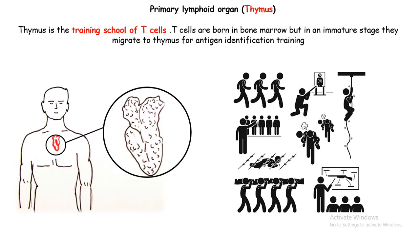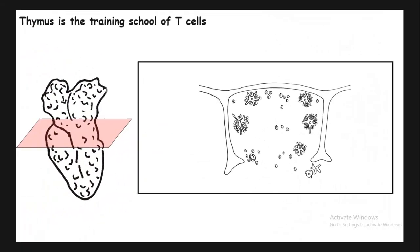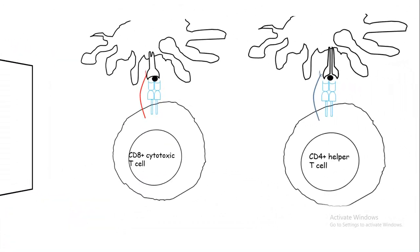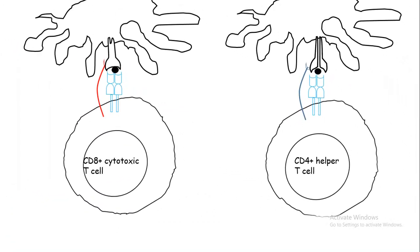Thymus is just a training school for T-cells, just like an army training school where the armies learn several tactics and become an army. After thymic selection, T-cells become two different types of T-cells.